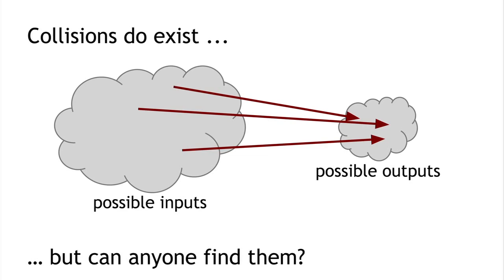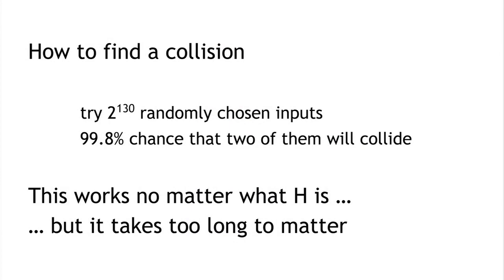The key question is: are there any collisions findable by regular people using regular computers? Now, there is a method guaranteed to work: pick 2 to the 130 randomly chosen inputs, and there's a 99.8% chance at least two will collide. This method works no matter what the hash function is. But the problem is it takes a very, very long time — you have to compute the hash function 2 to the 130 times, which is an astronomical number.